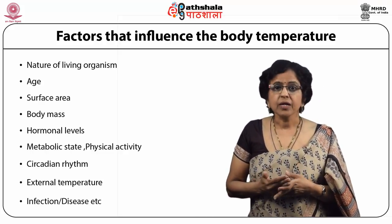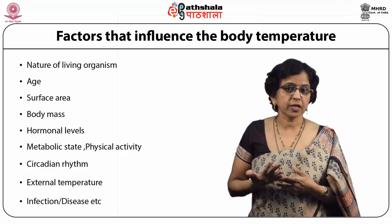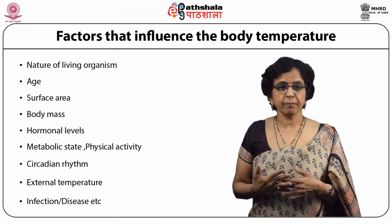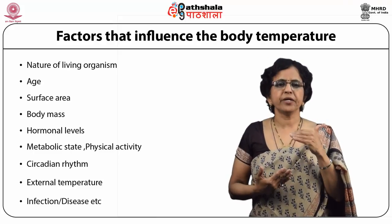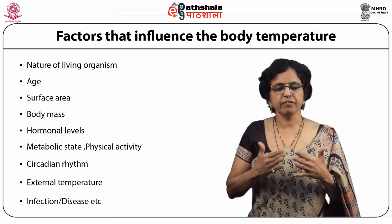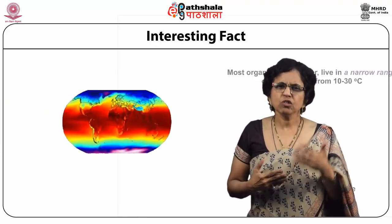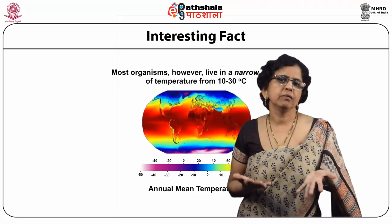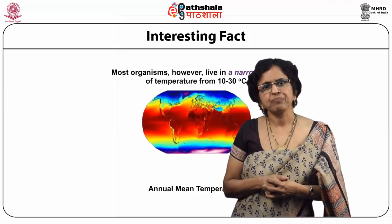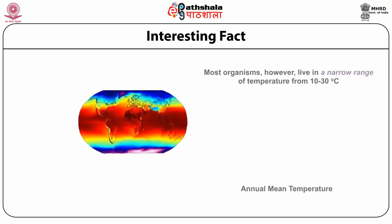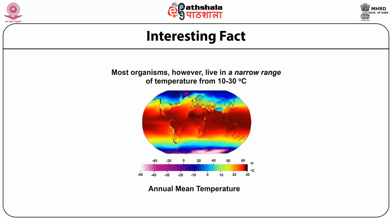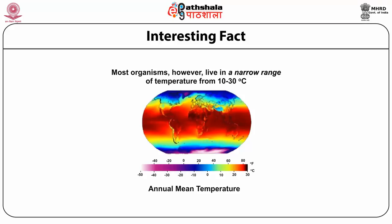During infection or disease, body temperature can rise. Most organisms on Earth live in a narrow temperature range of 10 to 30 degrees, with the majority concentrated in the central, warmer regions of the world. Very few organisms survive in polar regions. Evolutionarily, organisms have developed around this temperature range.